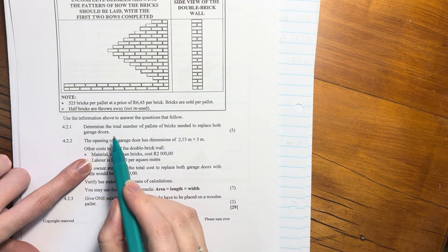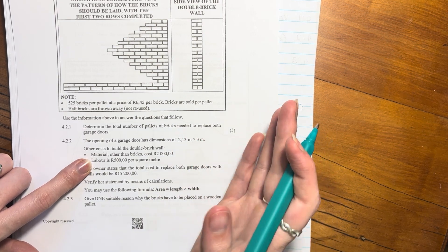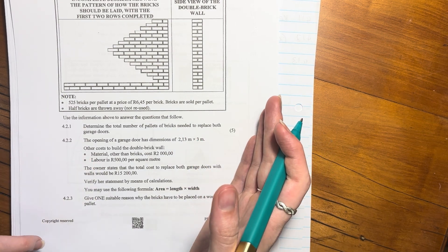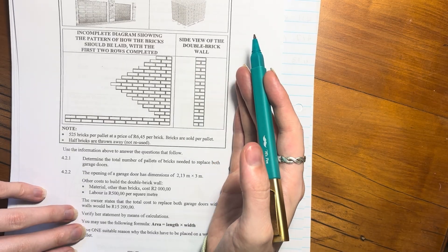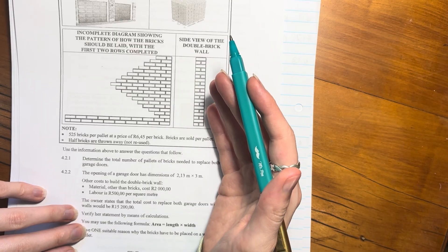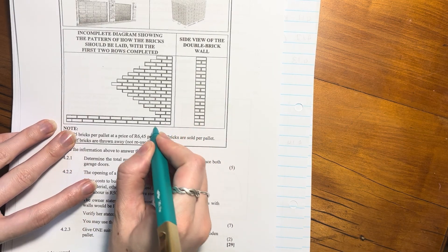The first question says determine the total number of pallets of bricks needed to replace both garage doors. So we're going to start with, okay, how much do we need for one wall and let's work from there.